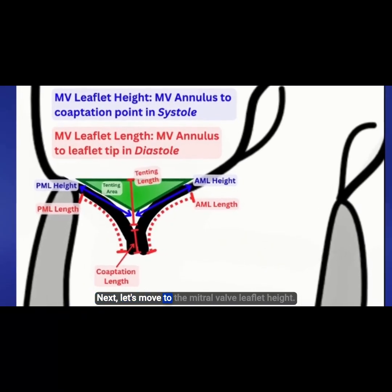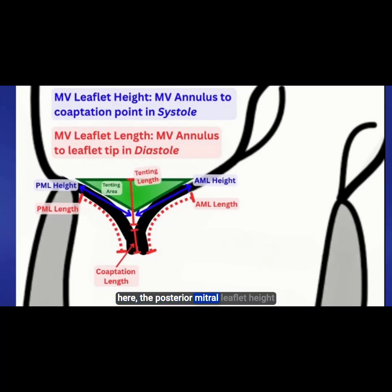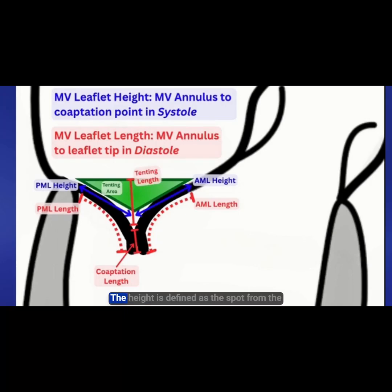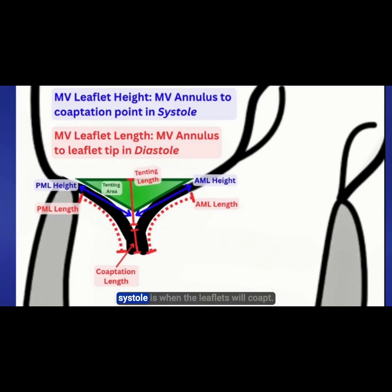Next, let's move to the mitral valve leaflet height. You'll see with the blue arrows here the posterior mitral leaflet height and the anterior mitral leaflet height, and this height is always going to be shorter than the length. The height is defined as the distance from the mitral valve annulus to the coaptation point in systole, and it's measured in systole because systole is when the leaflets will coapt.